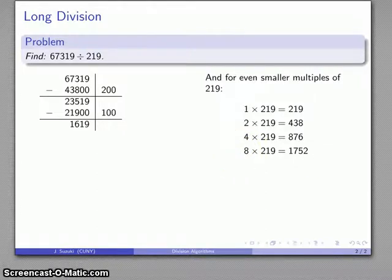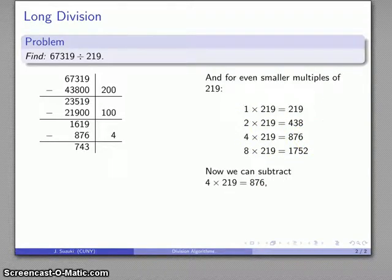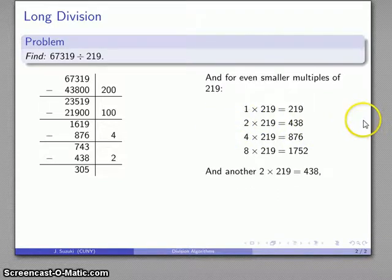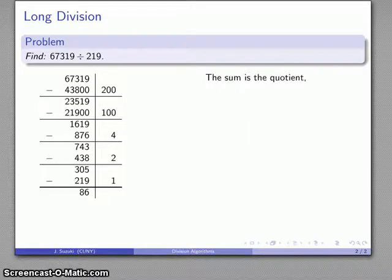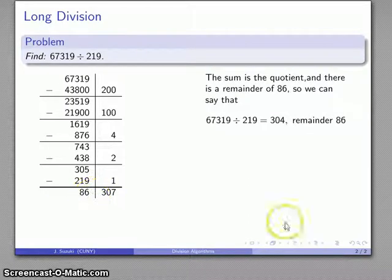I'll use what I have and subtract 4 times 219, then 2 times 219, and then one more 219. Now I have 86, which is smaller than my divisor. The sum is the quotient—how many 219's I've subtracted. Adding that up gives 307, and what's left over is the remainder, 86. So 67,319 divided by 219 equals 307 with a remainder of 86.